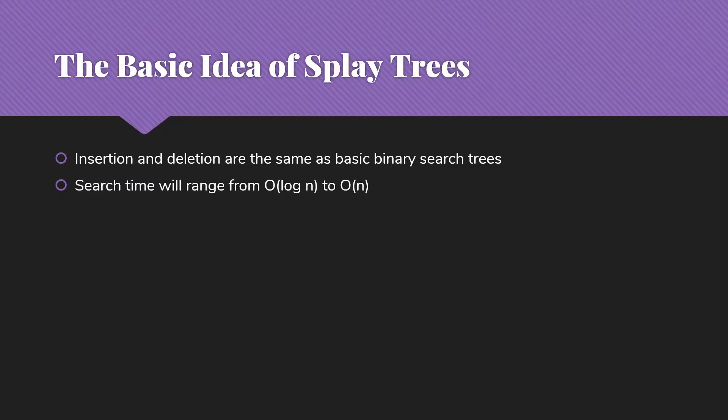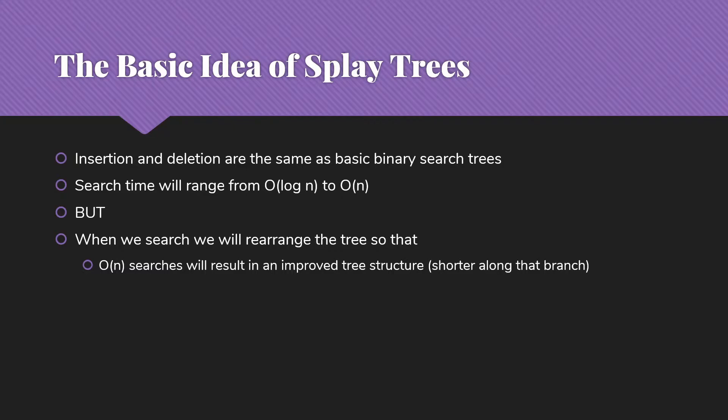Our search time is still going to range from log n to n, so not every single search will be as fast as it might be. But when we search we're going to rearrange the tree using rotations similar to those we use with AVL trees. If we get a search that is Big O of n, our rotations are going to improve the tree structure making it shorter on the branch where we found the item. Our rearrangements are going to result in recently or very frequently accessed items clustering toward the top of the tree.